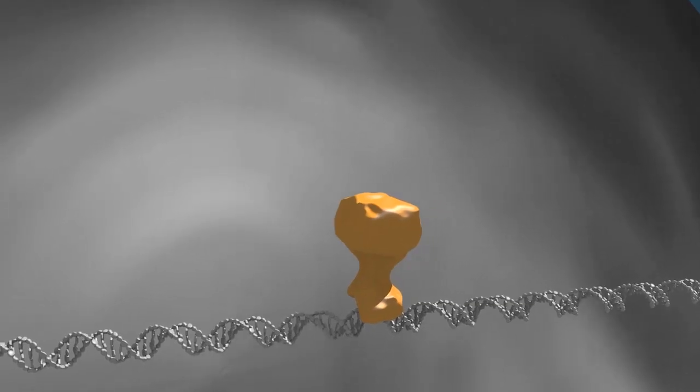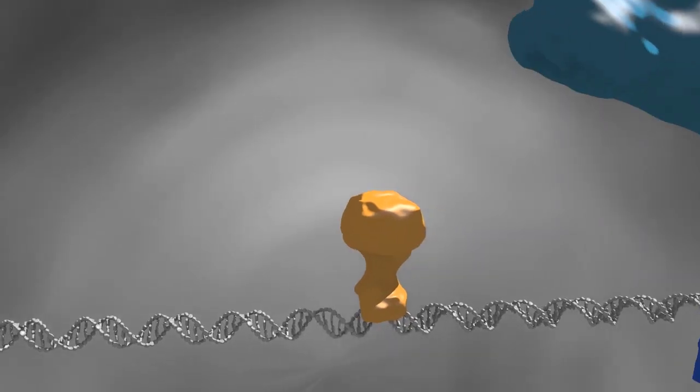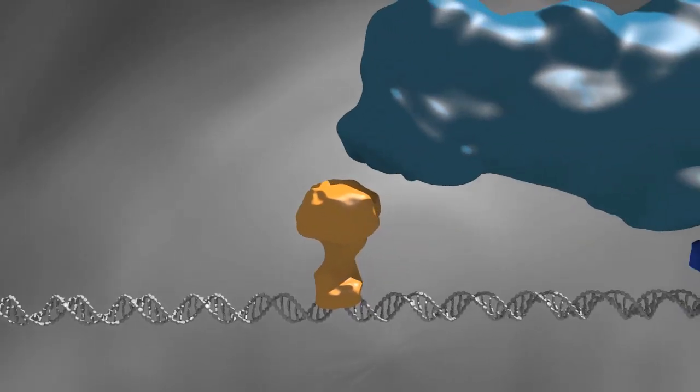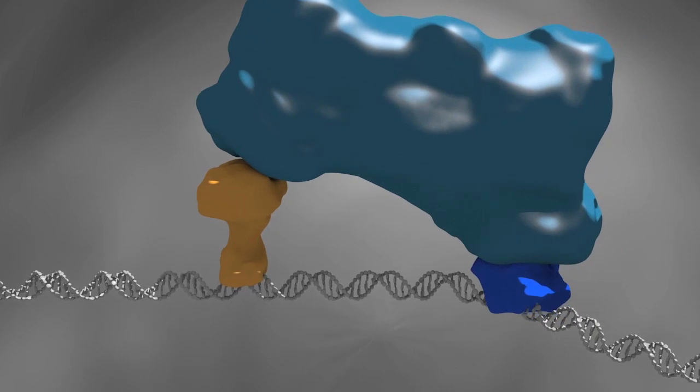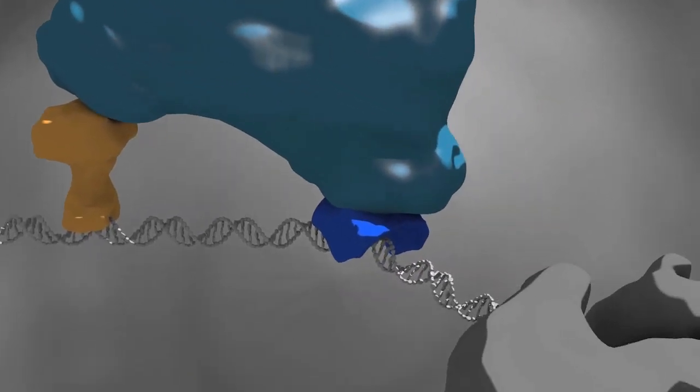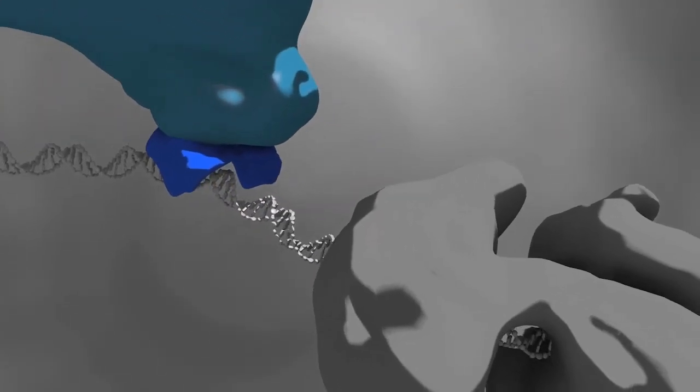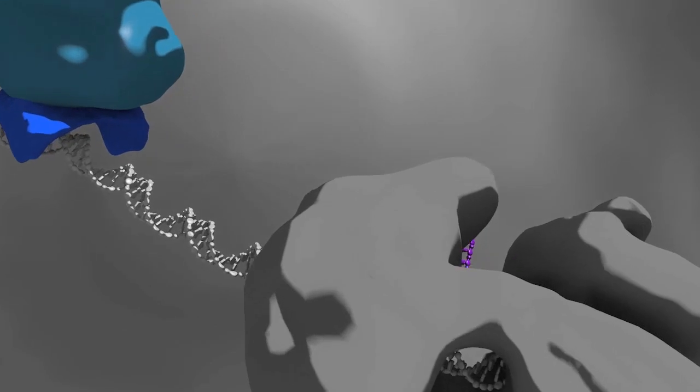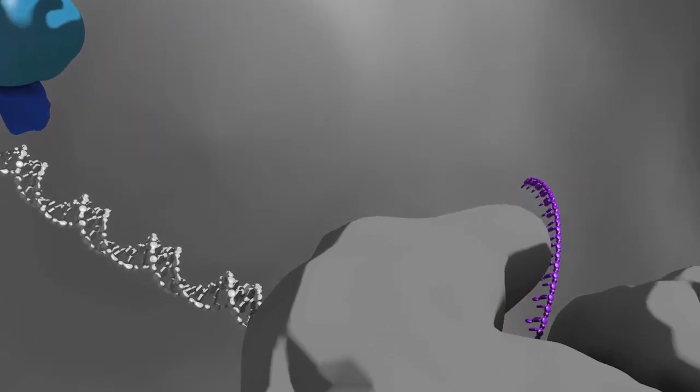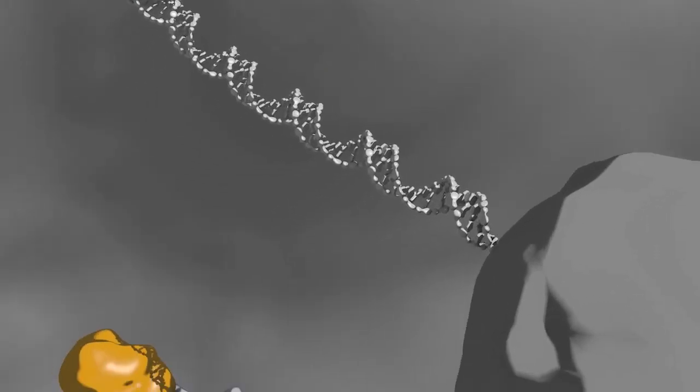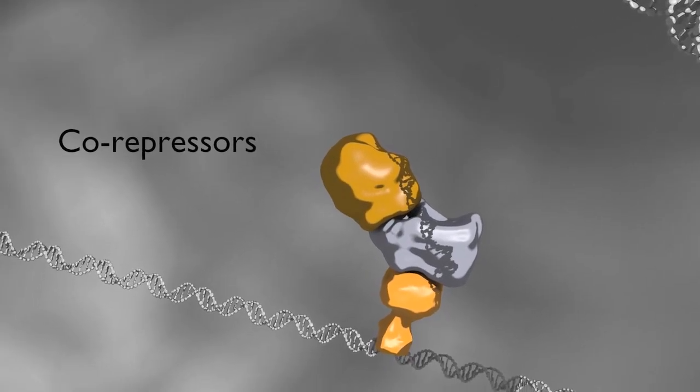In eukaryotic cells, the proteins that bind to regulatory sequences do not regulate transcription on their own. Instead, they recruit protein complexes that influence the rate at which the target gene is transcribed. Complexes that increase transcription are called co-activators, while complexes that suppress transcription are called co-repressors.